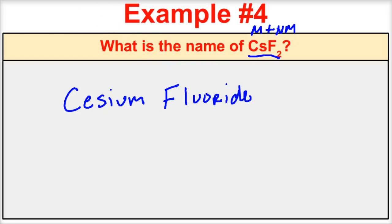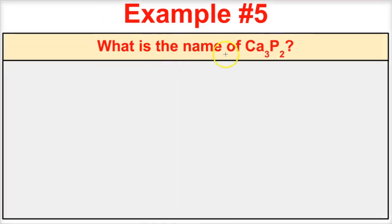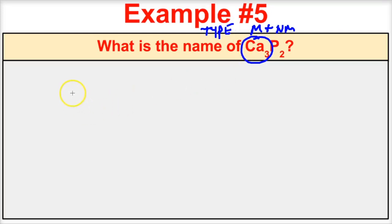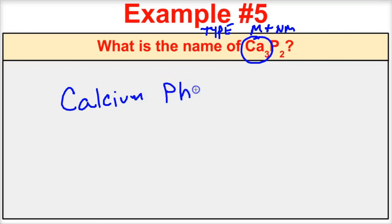Let's take a look at Ca₃P₂. We have a metal and a nonmetal, so this is an ionic compound. Calcium comes from group 2 on our periodic table, which makes this a type 1 binary ionic compound. When we name this, we follow the rule: we call the metal calcium, then change the ending of phosphorus to an -ide ending, and we get calcium phosphide.